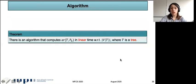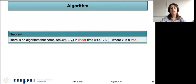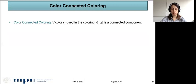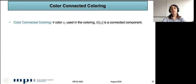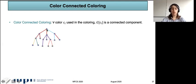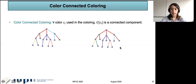In the last part of my talk, I want to explain the algorithm. We give an algorithm that computes the anti-Ramsey number of a tree T and P_k in linear time with respect to the number of vertices. We consider a tree as our host graph G. We need to define the notion of color-connectedness: a coloring is color-connected if for each color C used in the coloring, the subgraph of edges colored with C is connected. For instance, a coloring where red edges form two separate components is not color-connected, but if every color's edges form a single connected component, it is color-connected.